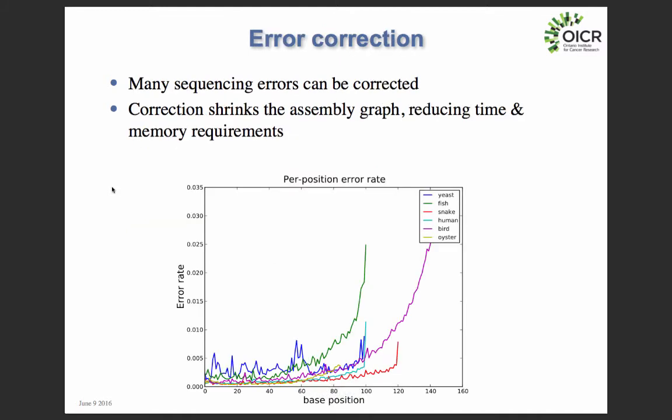Here's a slide with the error rate for six different sequencing runs — part of an assembly competition. We sequenced a yeast, a Lake Malawi cichlid fish, a boa constrictor, a human genome, a parakeet, and an oyster. For the parakeet bird dataset, they sequenced 150 base pair reads, and the error rate increased to about 3% at the three prime end of the read. This is a bit higher than we're usually comfortable with, so you'd probably want to trim that back to about 100 bases to get rid of those extra errors.